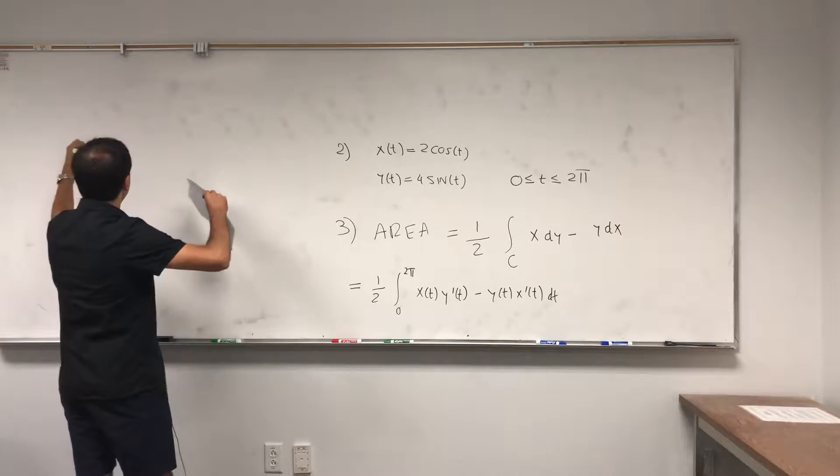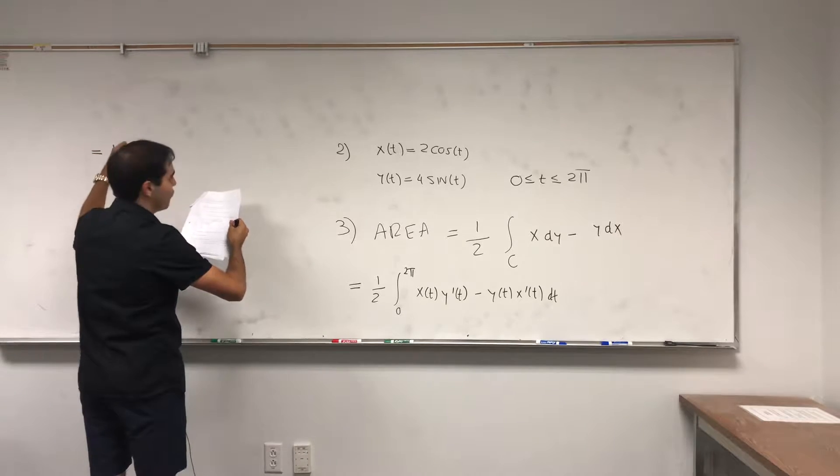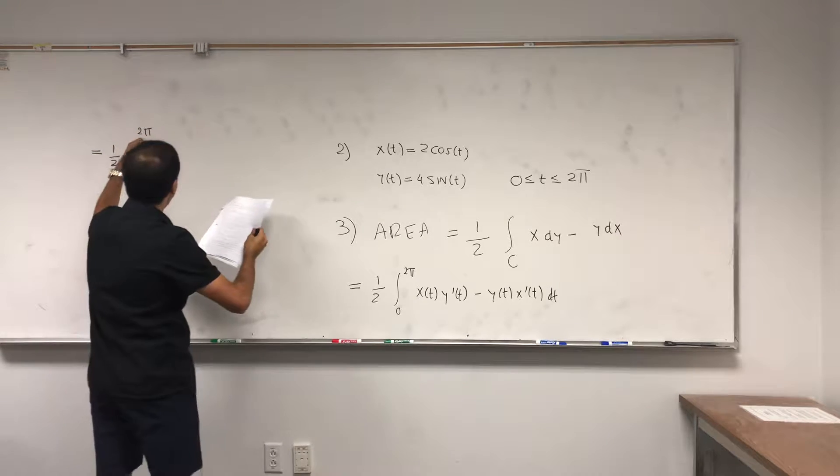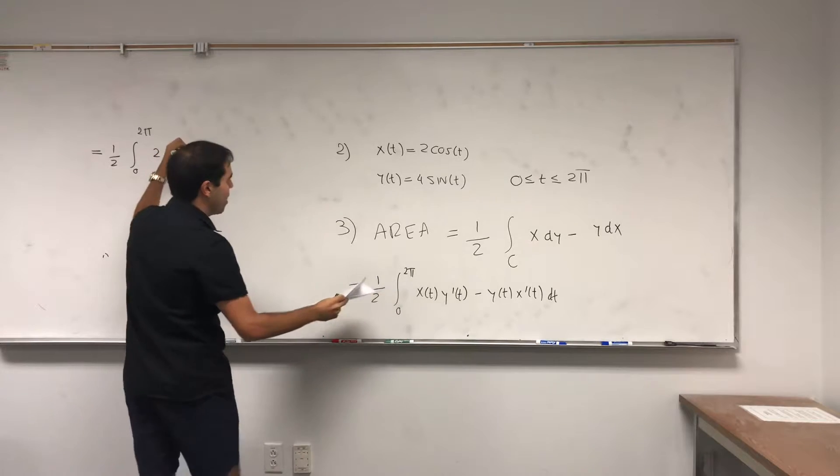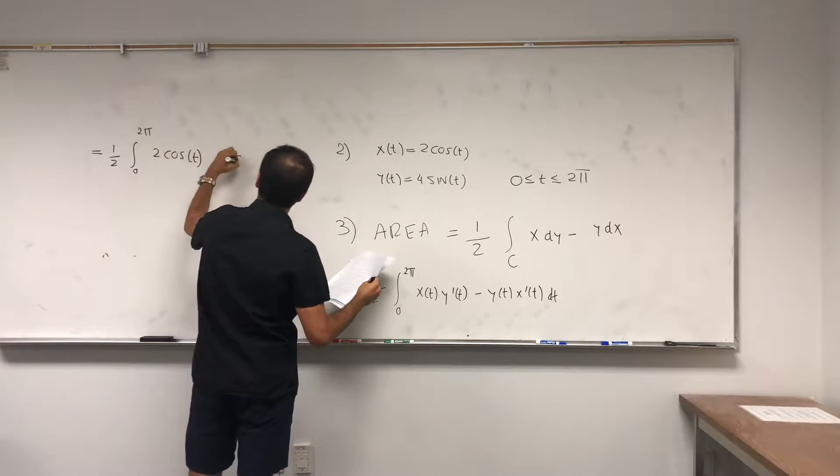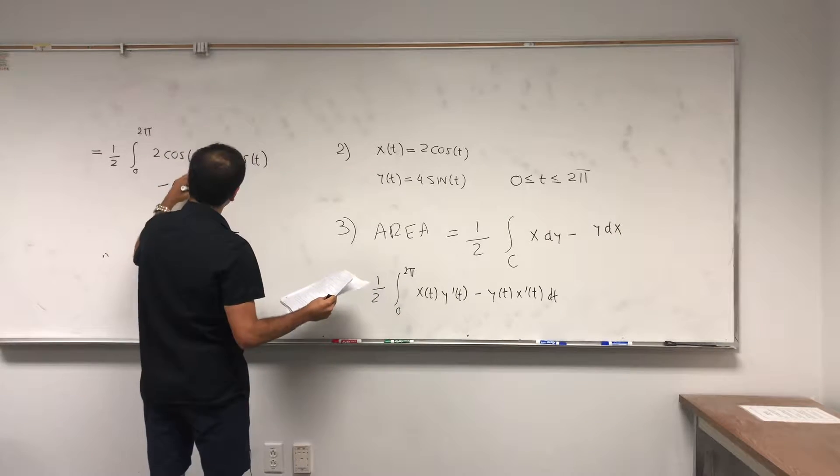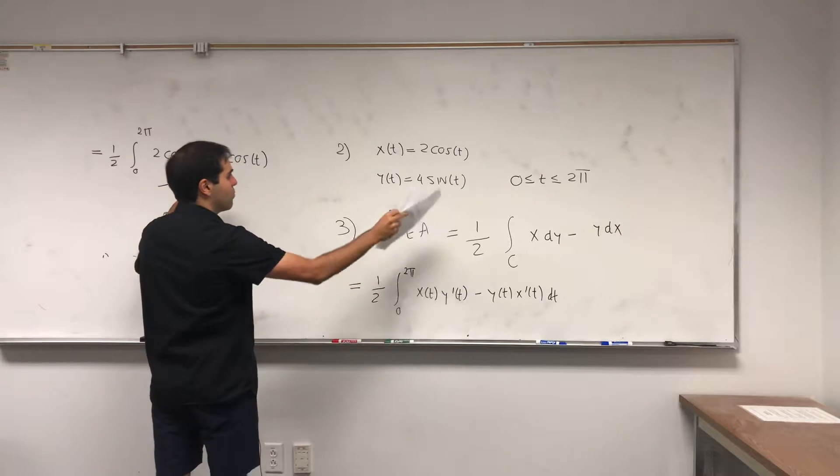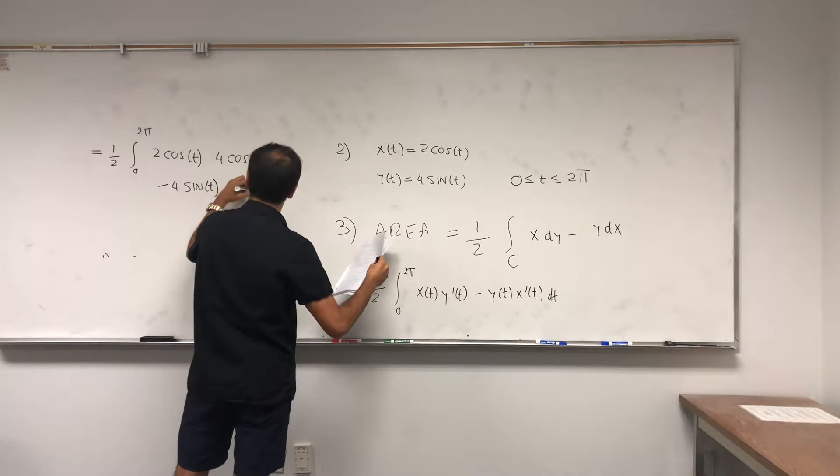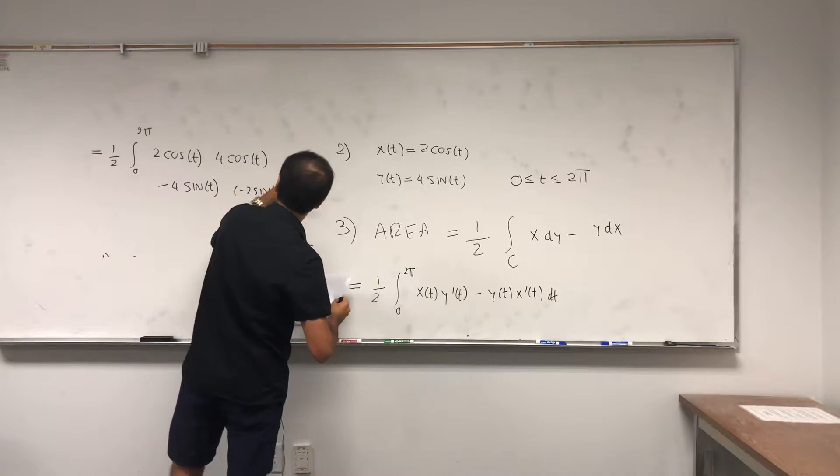Okay, let's calculate that. That's one half integral from zero to two pi, x is two cosine t, y prime is four cosine t, x prime is minus two sine t dt.